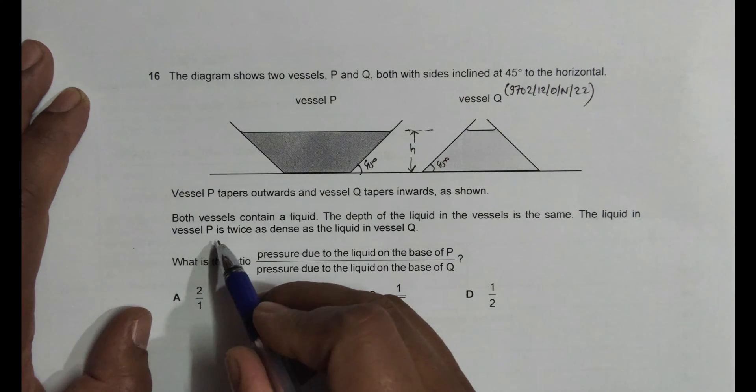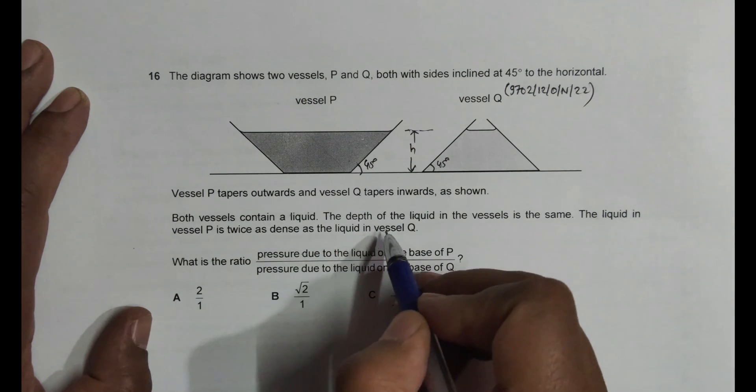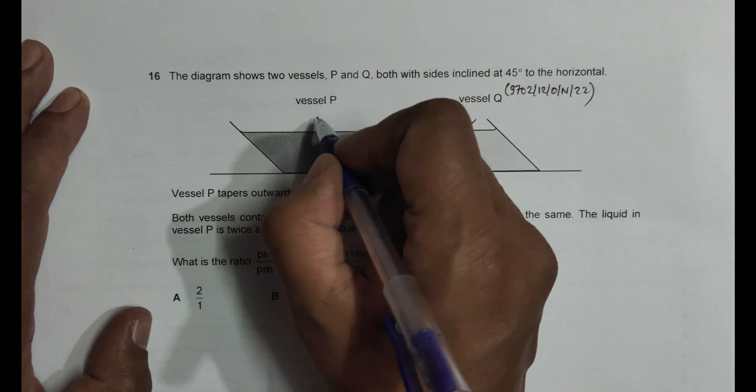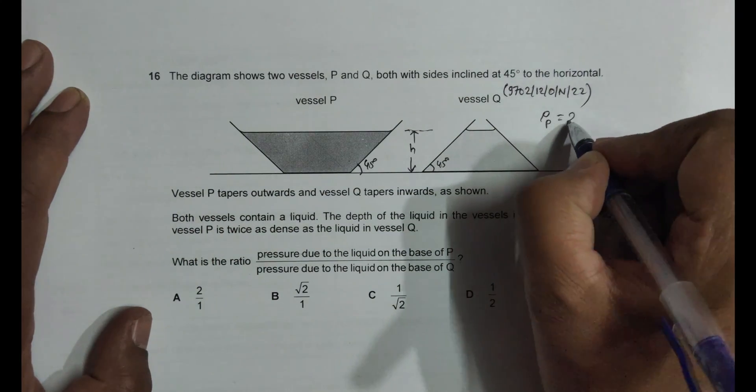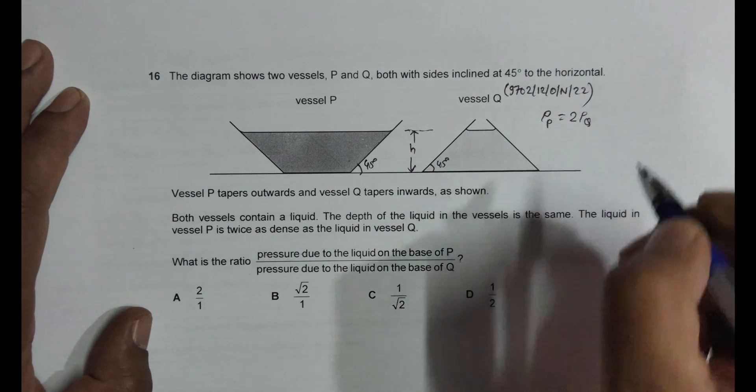The liquid in vessel P is twice as dense as liquid in vessel Q. So that means the density of P, ρ_P, is equal to twice of ρ_Q.